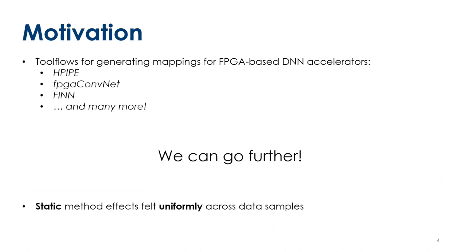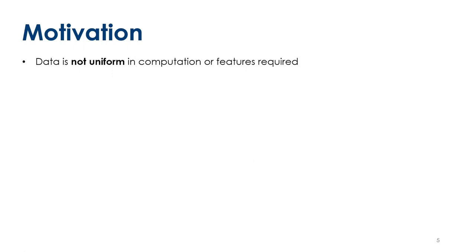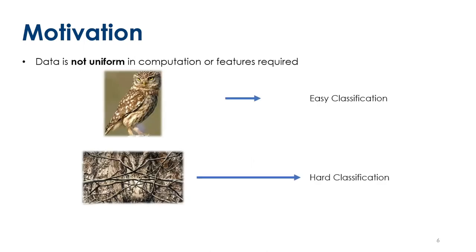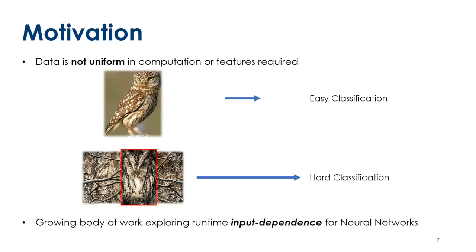The effects of a lot of these static methods on computation are felt equally or uniformly across the different data samples. However, we know that data is not uniform in the computation or features required. Take a very obvious example here. Got an easy classification and a hard classification. You don't have to spend much computation at all working out that the top image is definitely an owl. The bottom one is a little bit trickier. If you're locked into a fixed network structure, you won't necessarily be able to benefit from this significant difference in computation required.